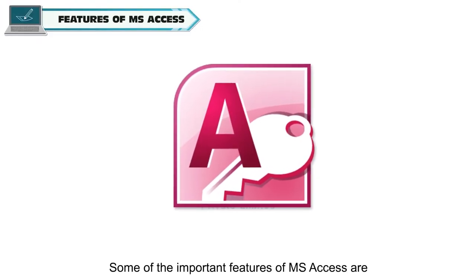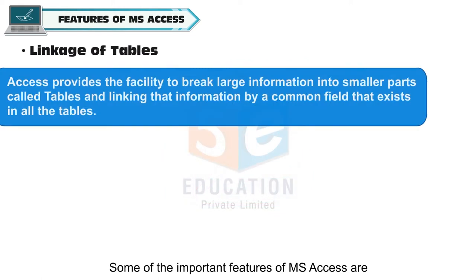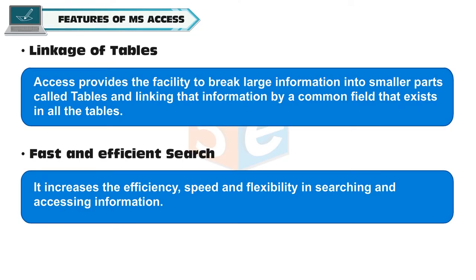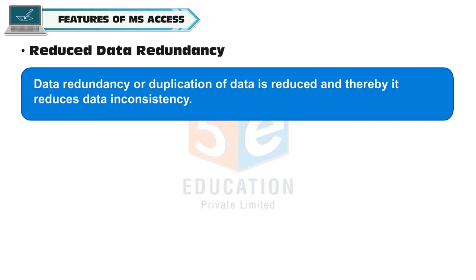Some of the important features of MS Access are: Access provides the facility to break large information into smaller parts called tables and linking that information by a common field that exists in all the tables. It increases the efficiency, speed and flexibility in searching and accessing information.